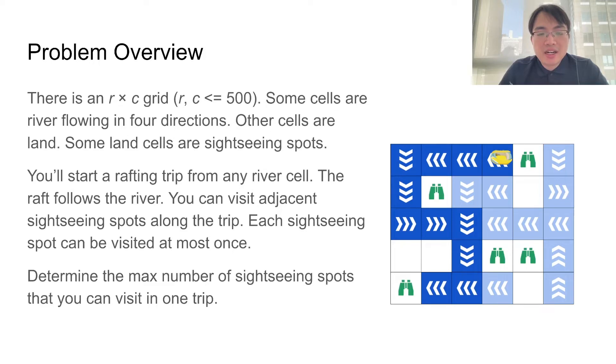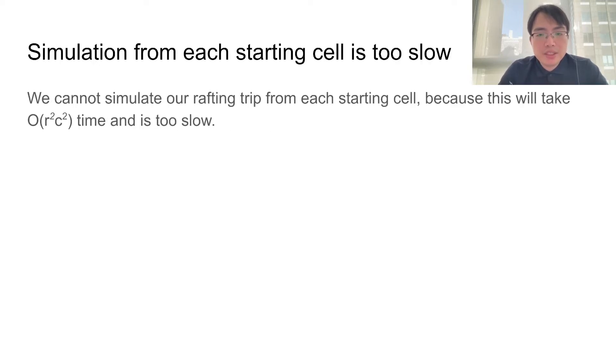The constraints here are R and C are up to 500. Because of the constraint, we cannot afford simulating our rafting trip from each possible starting cell, because this will be too slow and take R square C square time.